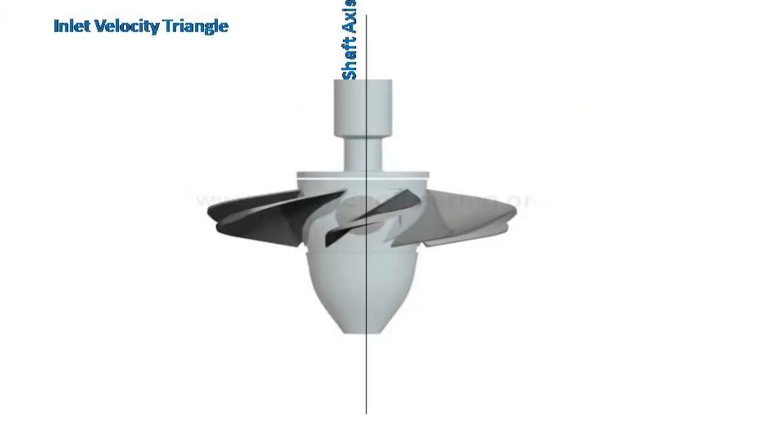In case of axial blade design, the fluid enters axially and leaves axially and hence the tangential velocity component VW is absent at both inlet and exit.